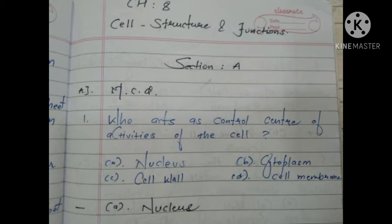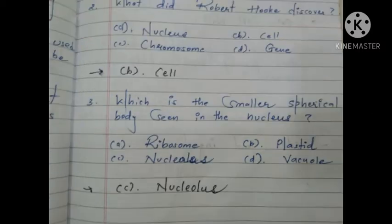First one: who acts as the control center of activities of the cell? The answer is A, nucleus. Second one: what did Robert Hooke discover? The answer is B, cell. Third one: which is the smaller spherical body seen in the nucleus? The answer is C, nucleolus.